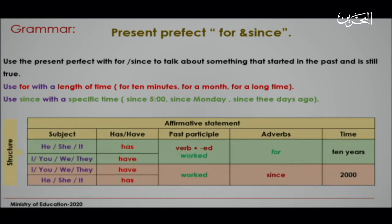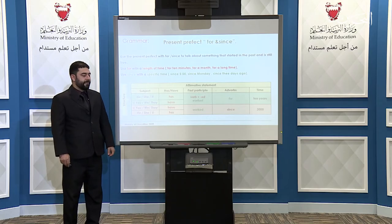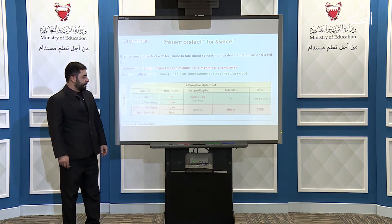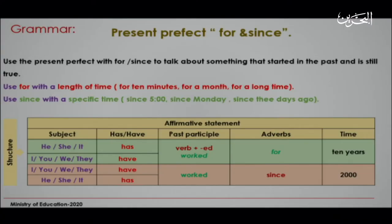You have a table. Notice that these statements are affirmative. The structure begins with the subject, then 'has' or 'have' depending on the subject, followed by the past participle, the adverb 'for' or 'since,' and then the time expression.